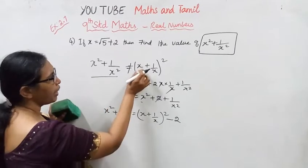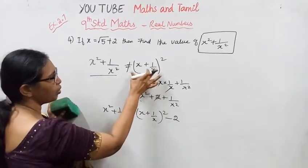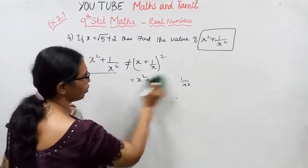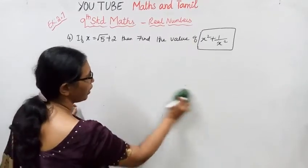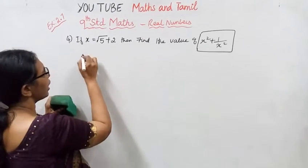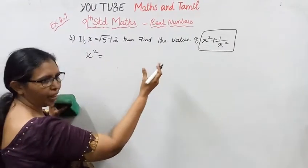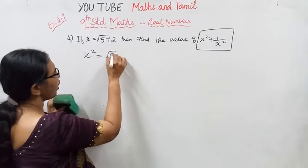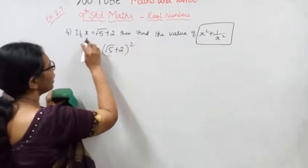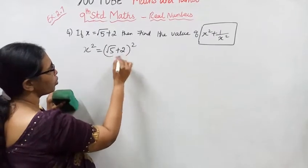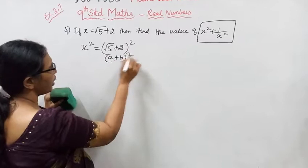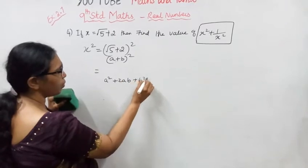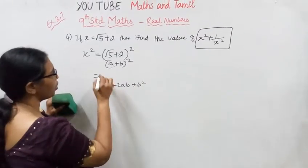First, let's find x². x² equals (root 5 plus 2)². Using the formula (a + b)² = a² + 2ab + b², we get: (√5)² + 2(√5)(2) + 2². This equals 5 + 4√5 + 4.